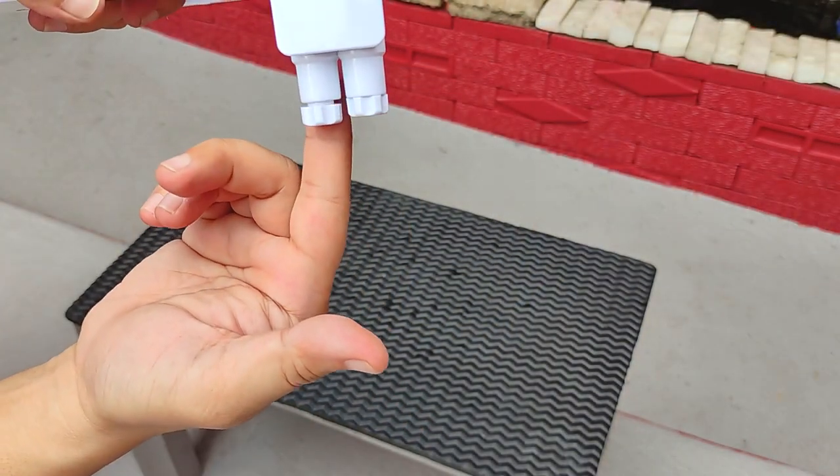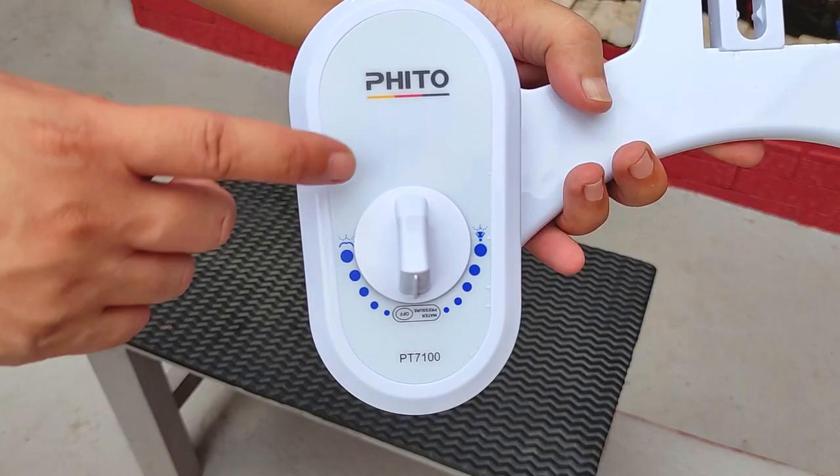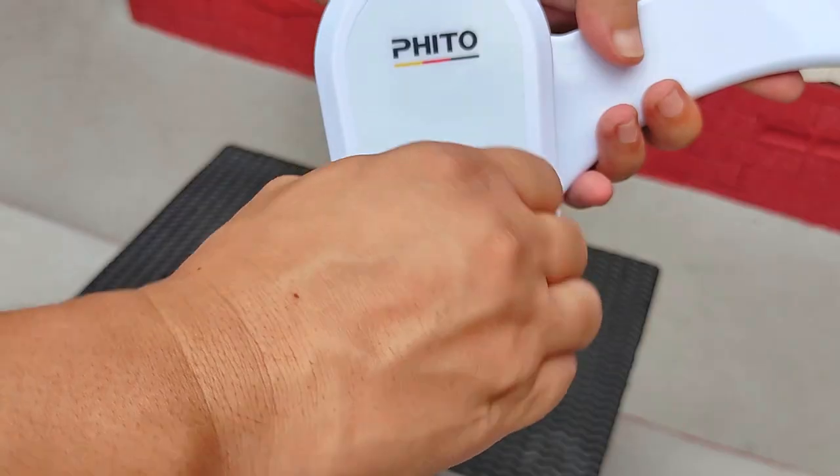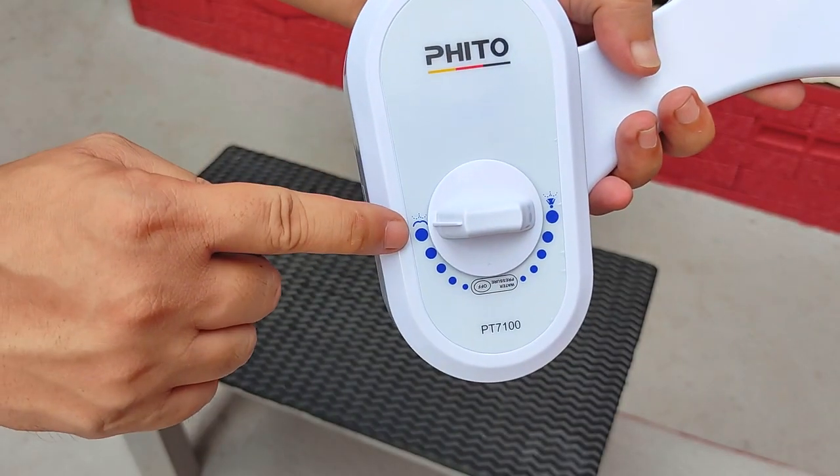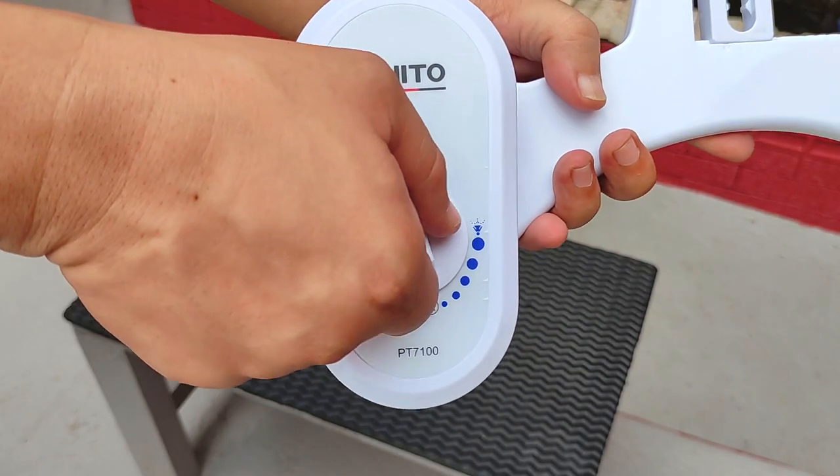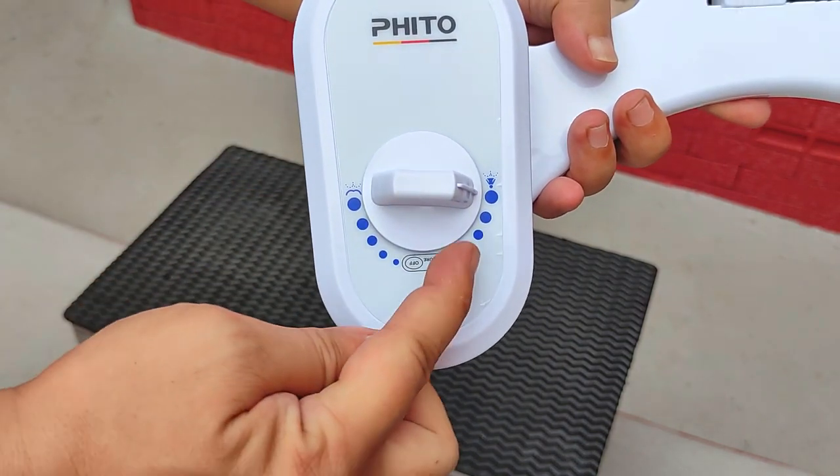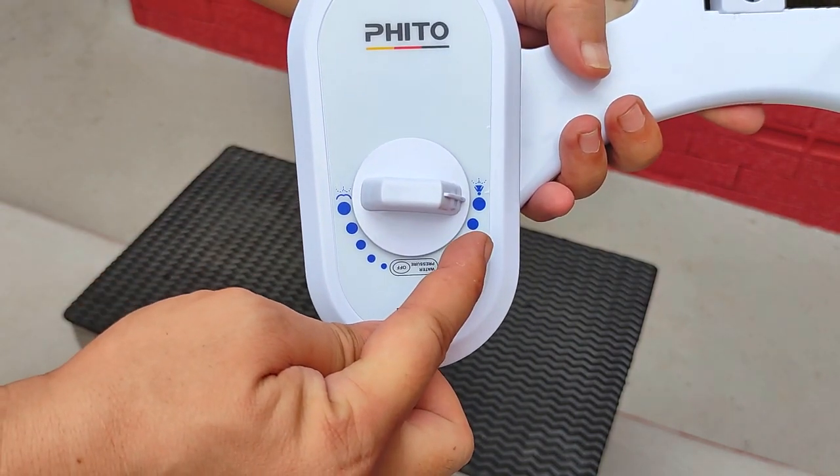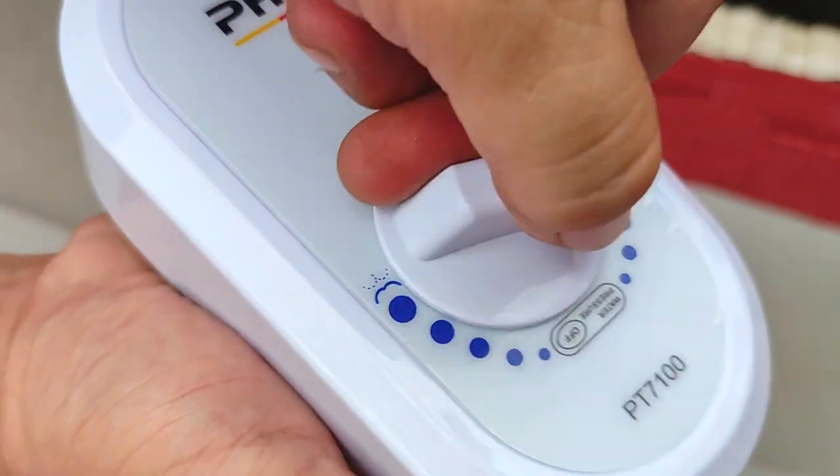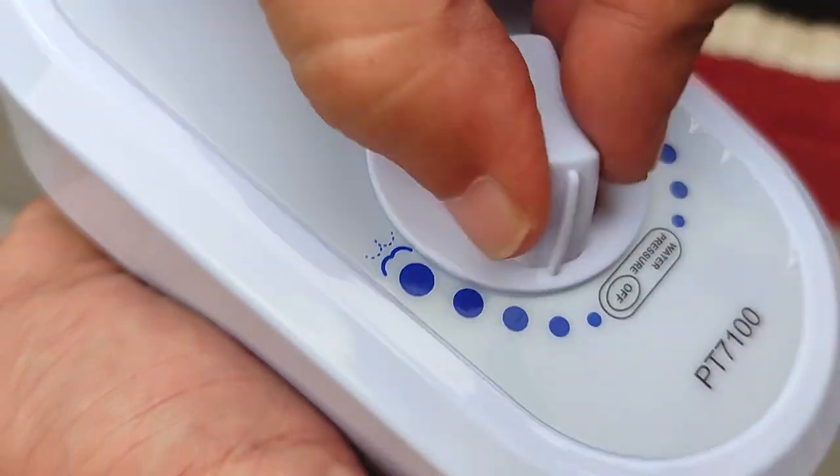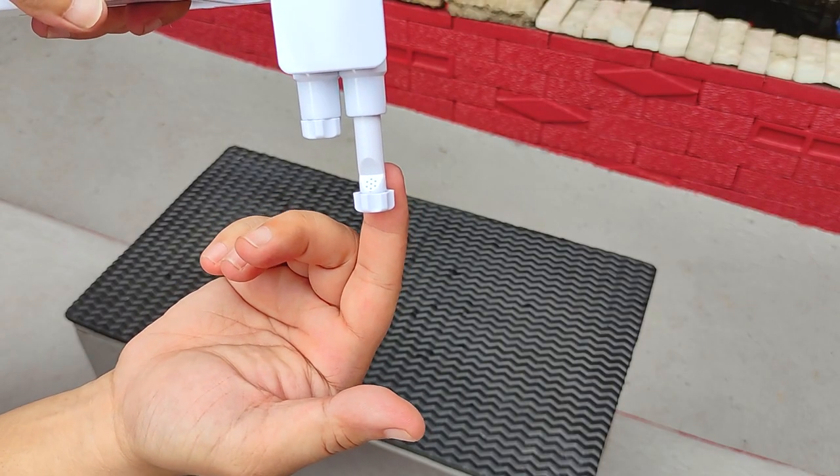And two, it has a dual nozzle system. So the way it works is that on one side we have the typical mode for washing your behind, and on the other side we have a mode specific for feminine washing. So how far and in which direction you turn the knob determines which of these two spray nozzles is activated and the pressure of water that actually comes out.